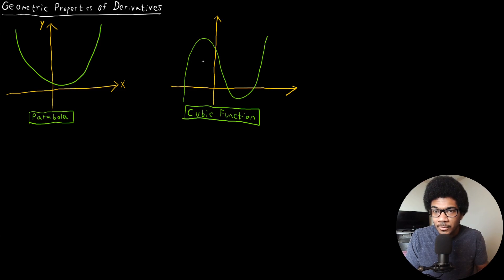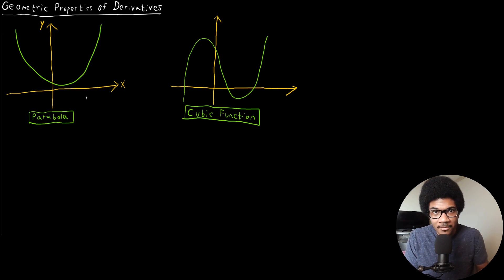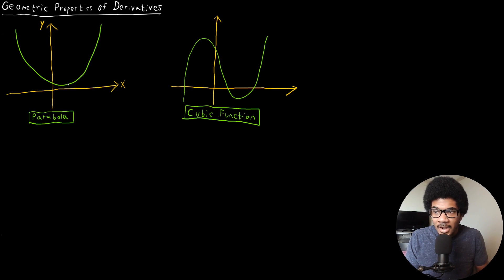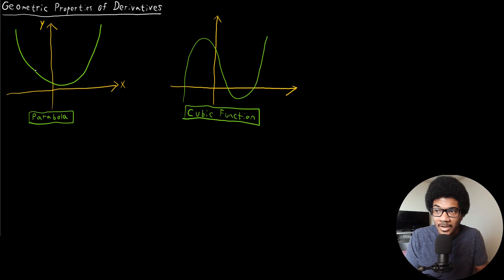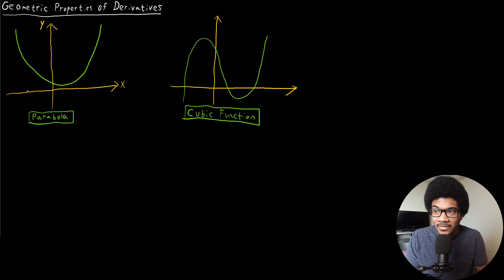Here I've plotted two sketches of functions. On the left we have a parabola — this is what you typically get from a second order polynomial, a quadratic function. I've also plotted a cubic function. Along these curves there are different points where the graph is increasing or decreasing. For this parabola, the function is decreasing until it reaches some minimum, and then it starts to increase again. That point where it reaches a minimum is very important.